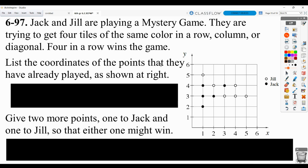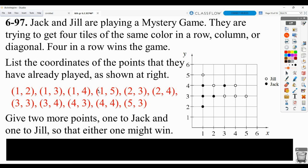Here, you have to list the coordinates of the points that they've played. They put it in kind of a random order. I think it would make more sense to indicate which ones were Jack's and which ones were Jill's. So I will do that for you. Jack would have had the ordered pair 1, 2. He would have also had 1, 3, 1, 4, and 3, 4.